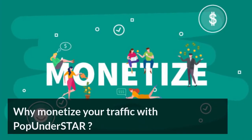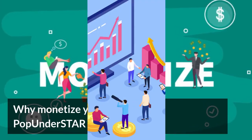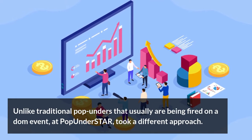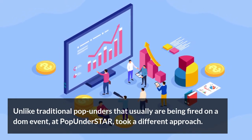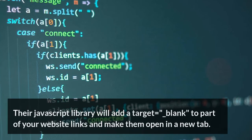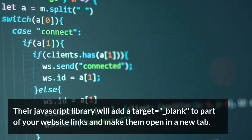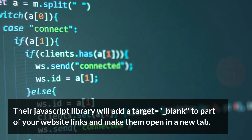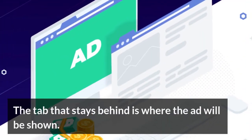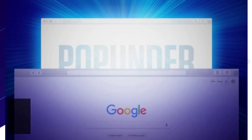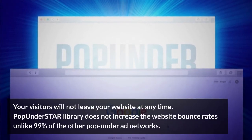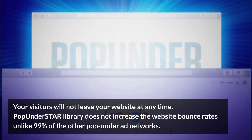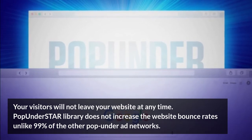Why monetize your traffic with Pop-Under Star? Unlike traditional pop-unders that usually are fired on a DOM event, Pop-Under Star took a different approach. Their JavaScript library will add a target equals underscore blank to part of your website links and make them open in a new tab. The tab that stays behind is where the ad will be shown. The ad will not leave your website at any time, and Pop-Under Star's library does not increase the website bounce rates, unlike 99% of other pop-under ad networks.